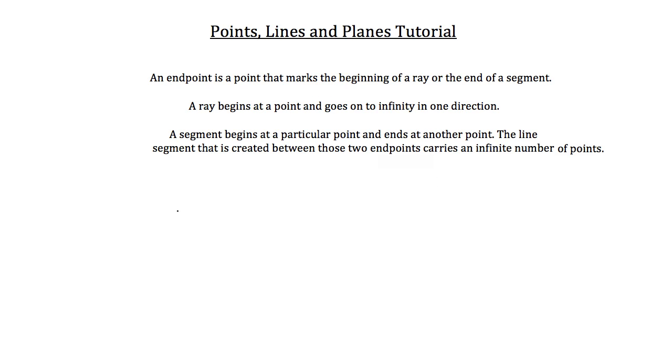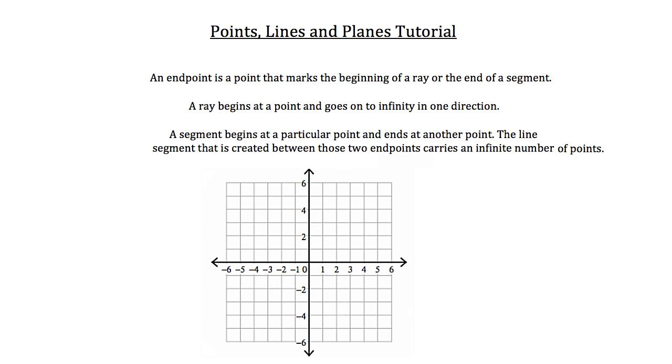So let's go ahead and bring in a graph and illustrate these points as well. So here's that graph. All right, well an endpoint is a point that marks the beginning of a ray. A ray begins at a point. So let's just pick a random point on here. I'm going to pick this point right here, negative four comma three. So a ray begins at a point, so it will begin at this point and it's going to go to infinity in one direction. So I'll just pick a random direction and draw that ray starting at that point and going to infinity in that direction. So there it is.